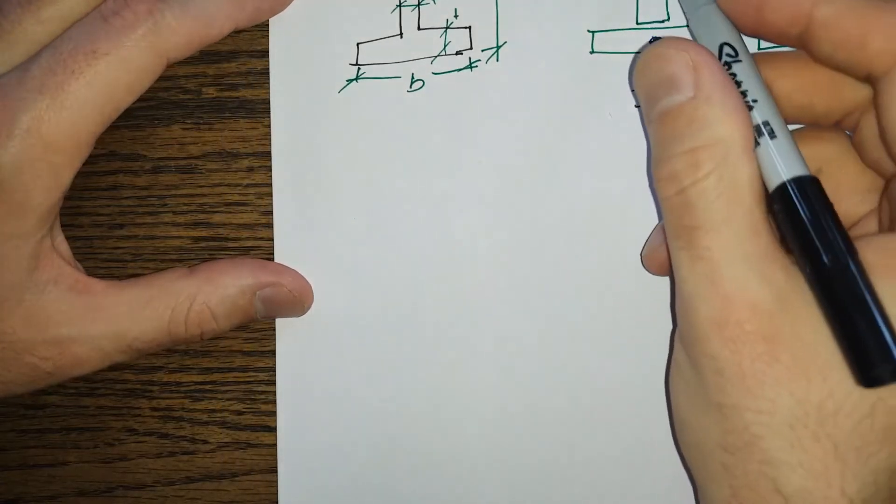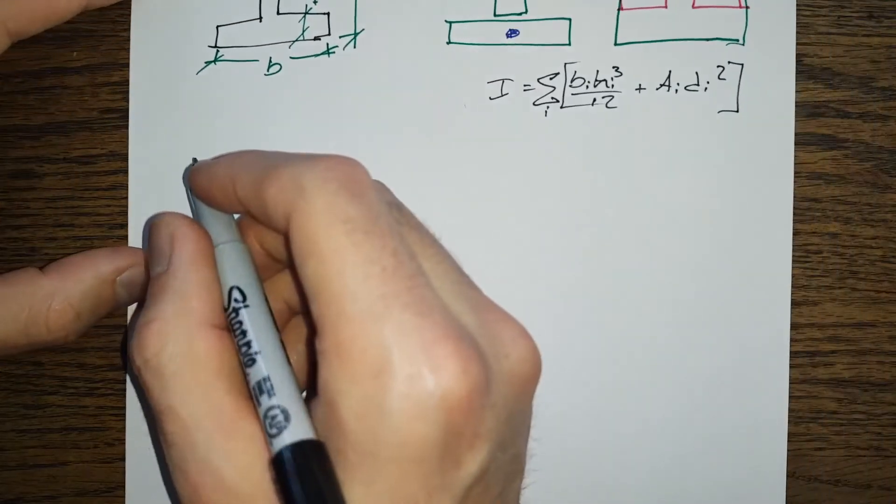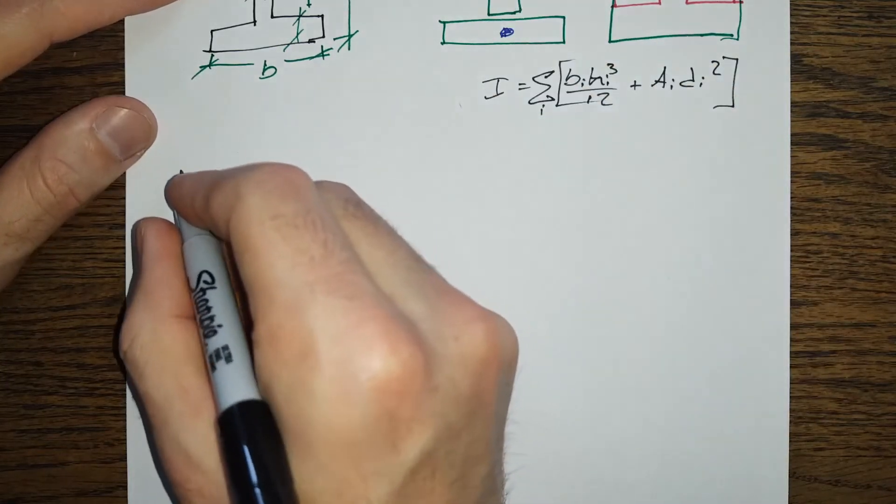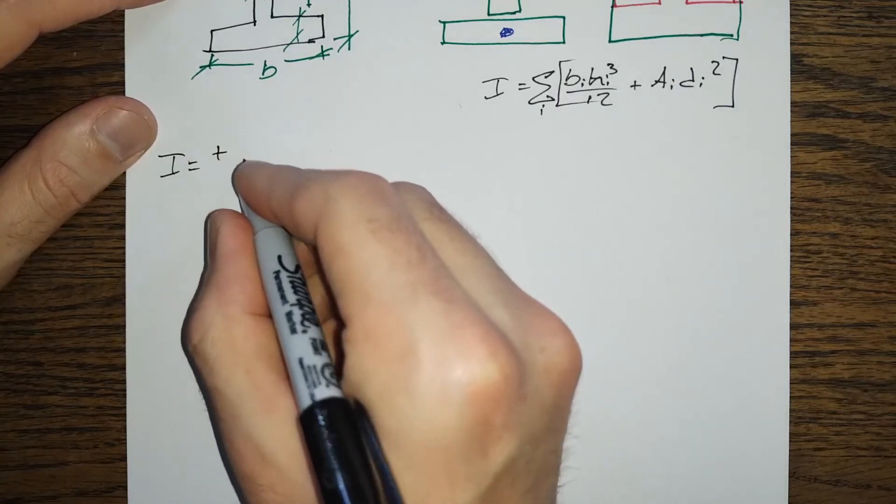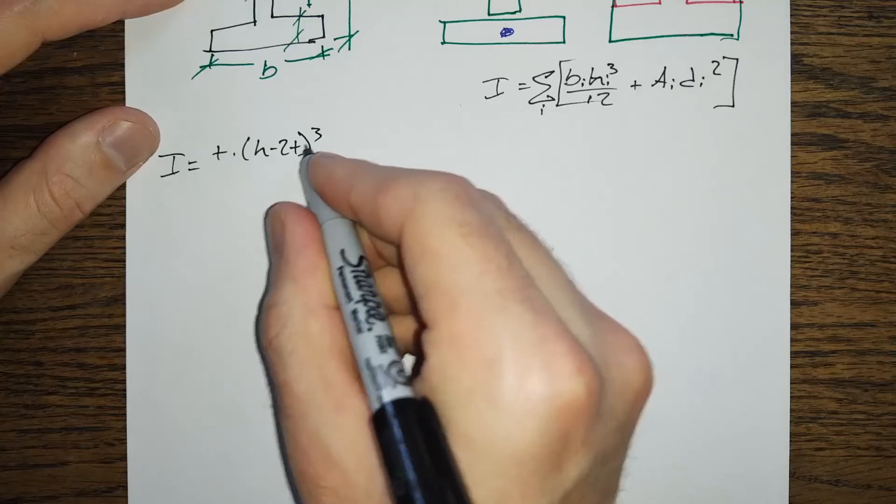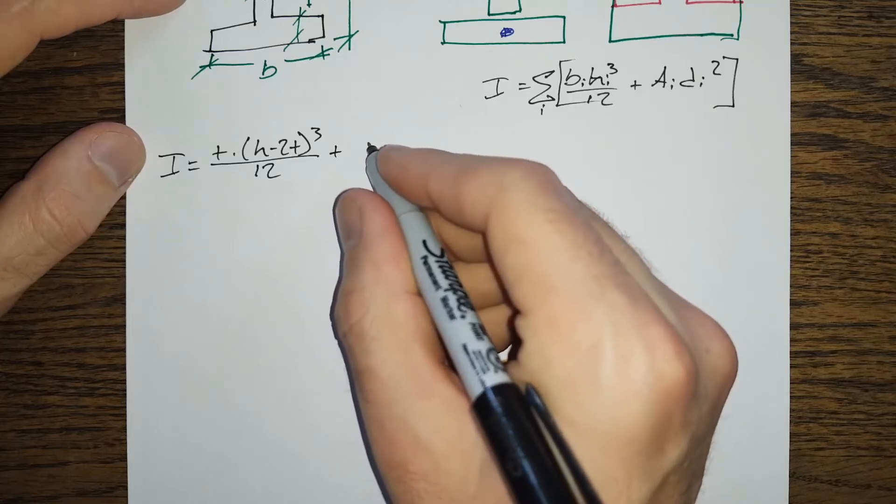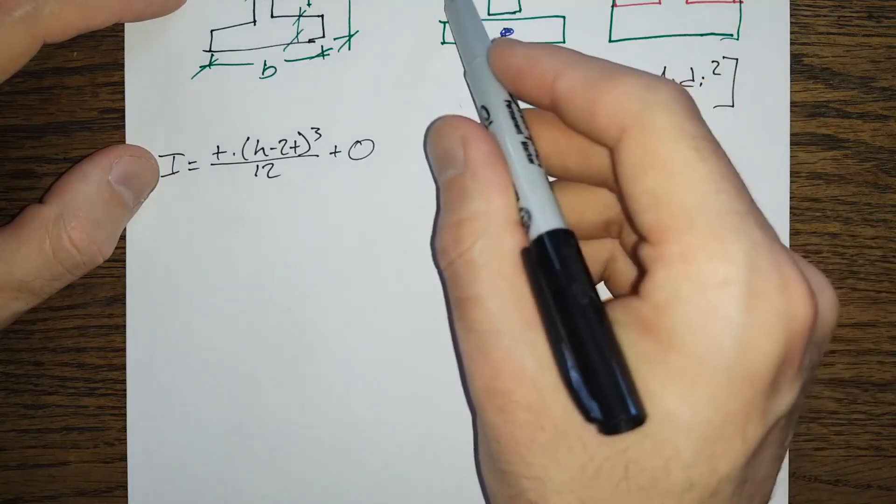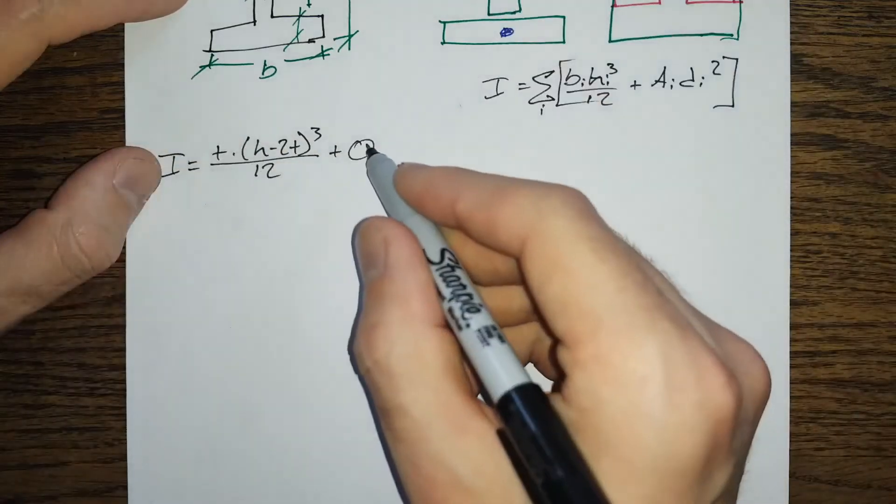All right, so I'm going to do this, and I'm claiming that these two are the same, so we're going to get ourselves, let's see, for the center section here we've got I equals, so our width is t, our height is h minus 2t, cubed over 12, plus zero because we've got no distance to our middle centroid here. We know that the center of gravity for the entire shape is at the same spot as this middle rectangle, so this distance term would be zero.